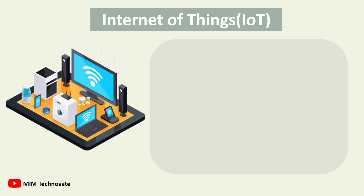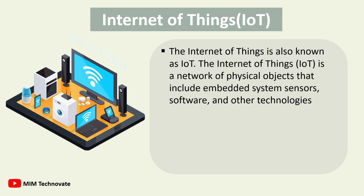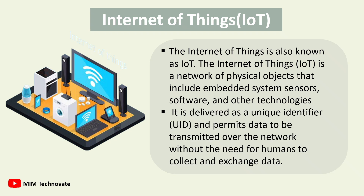The Internet of Things, also known as IoT, is a network of physical objects that include embedded system sensors, software, and other technologies. It is delivered as a unique identifier and permits data to be transmitted over the network without the need for humans to collect and exchange data.